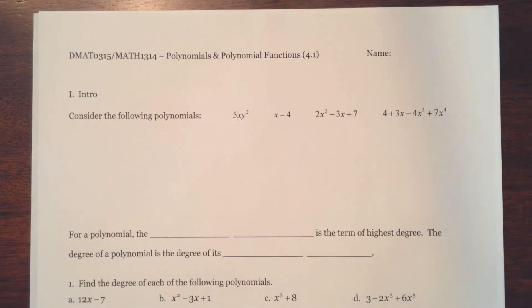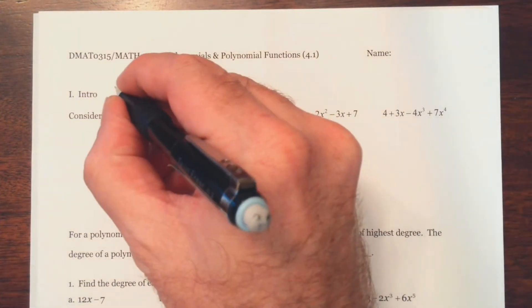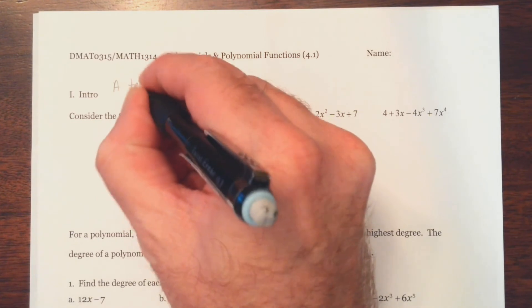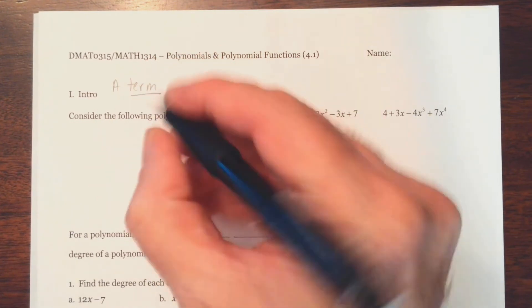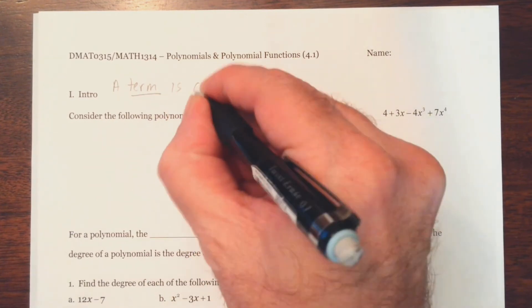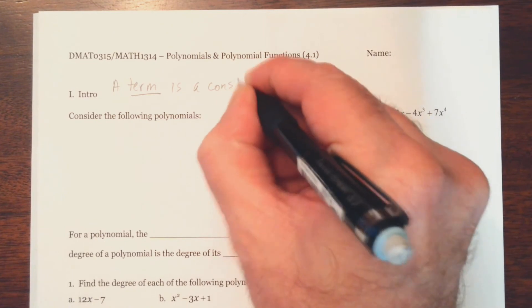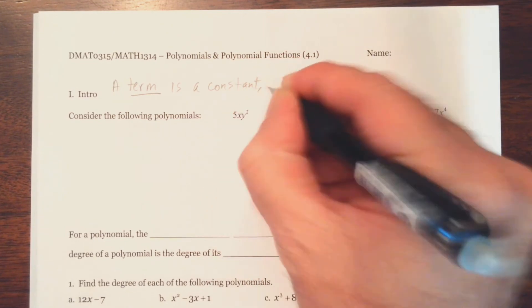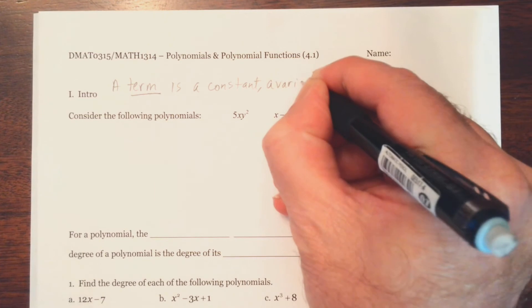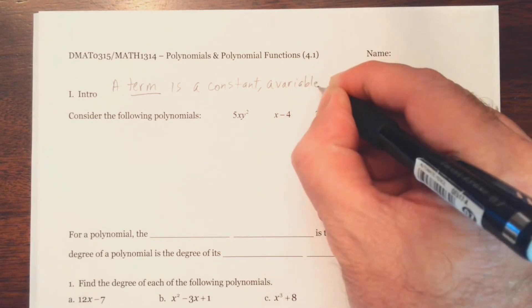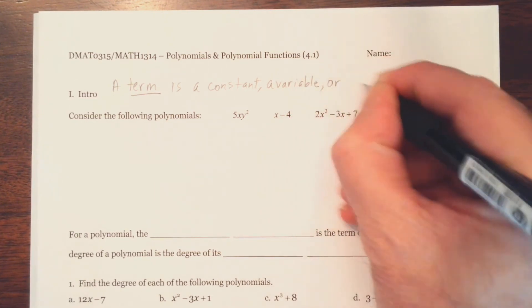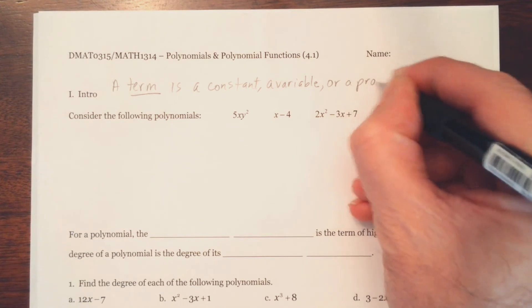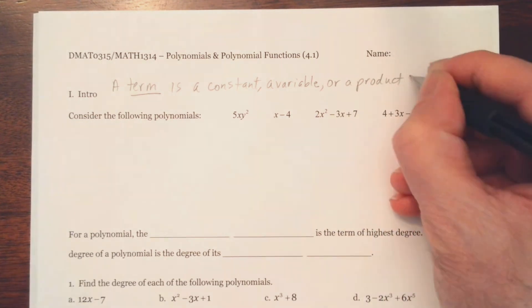Alright, in this video we'll be looking at polynomials and polynomial functions. So first of all I want to start with the definition. A term is a constant, a variable, or a product of both.